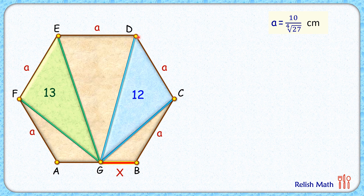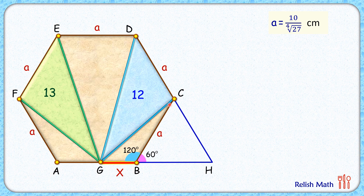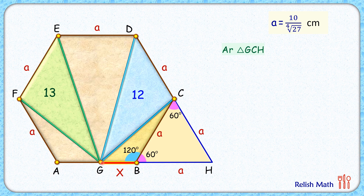To find x, let's extend DC and AB to meet at point H. Since this is a regular hexagon, the interior angle is 120 degrees, making the remaining angle 60 degrees. Similarly, the angle at the other side is 120 degrees with a remaining angle of 60 degrees. Therefore triangle CBH is an equilateral triangle, meaning BH = a and CH = a. Now for the area of triangle GCH: taking base GH with height CM, and noting that DC and CH are equal in length, C is the midpoint of DH.